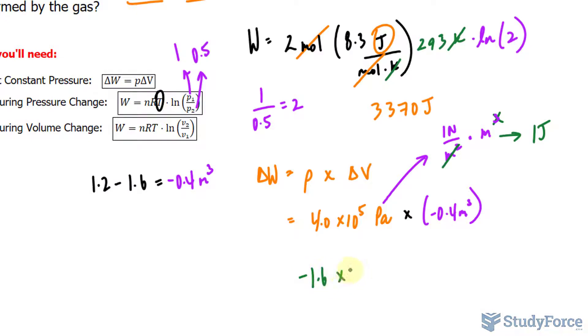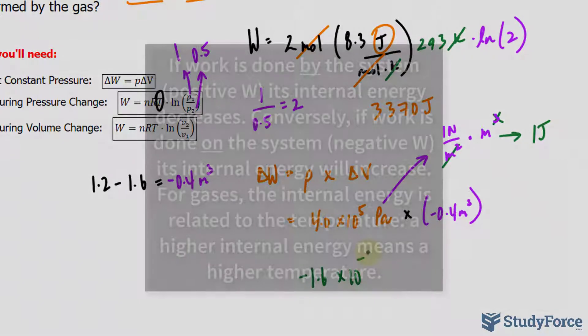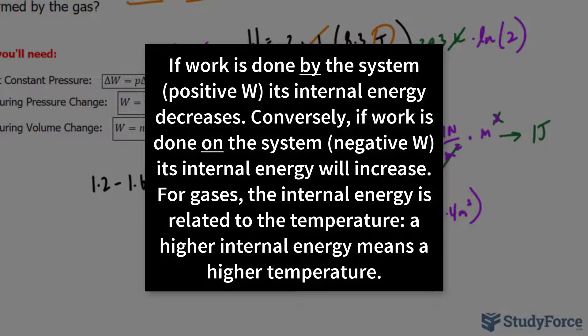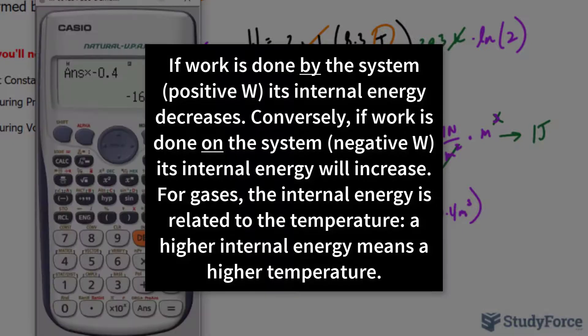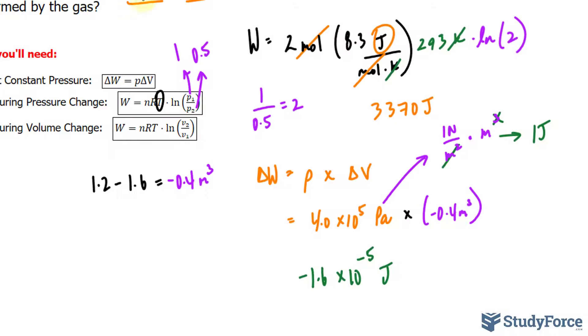Now, what does that even mean? What does this negative mean in this example? Why is it negative? Well, this negative indicates that the work was done on the system by an outside agent.